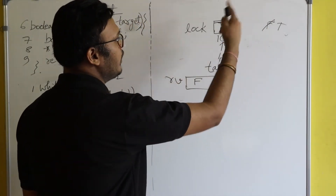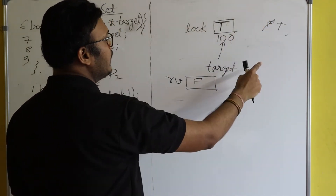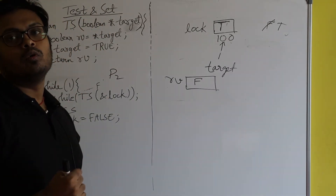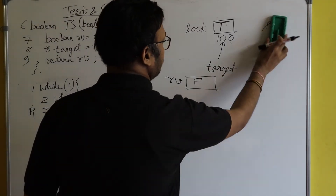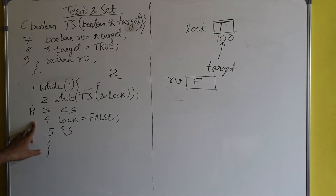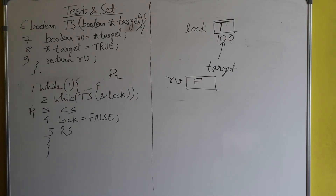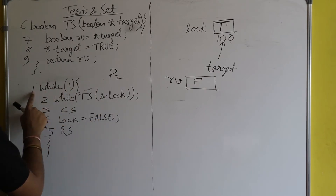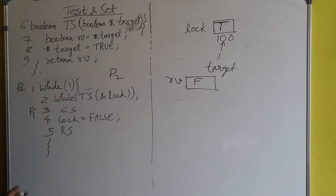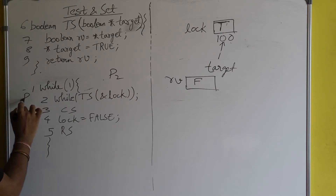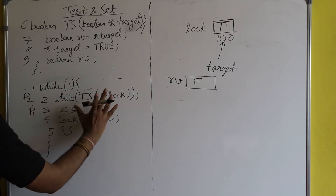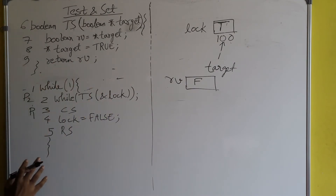P1 set lock to true so that when P2 tries to enter, due to this true value, P2 will get stuck in the while loop. Now P1 is already in the critical section, preemption happens, and P2 tries to enter. P2 will execute line one then line two — let's see whether P2 can break the while loop.